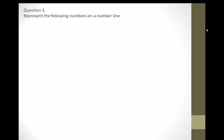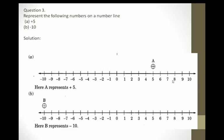Question number 3: Represent the following numbers on a number line — positive 5 and negative 10. This is our number line with 0 at center. On the same distance we draw vertical lines numbered 1 through 10 on the right — all positive numbers — and negative numbers on the left. Point A represents positive 5 on the right hand side, and point B represents negative 10 on the left hand side. Remember to keep a proper equal distance between all vertical lines.